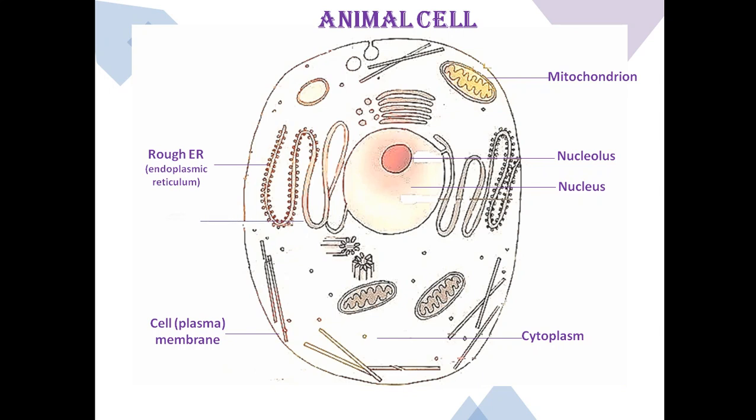Next is smooth endoplasmic reticulum. It is a meshwork of fine disc-like tubular membrane vesicles which form a part of a continuous membrane organelle within the cytoplasm. This helps in the synthesis and storage of lipids, including phospholipids and cholesterol. Cells that secrete these products, such as cells of testes, ovaries and skin oil glands, have an excess of smooth endoplasmic reticulum.